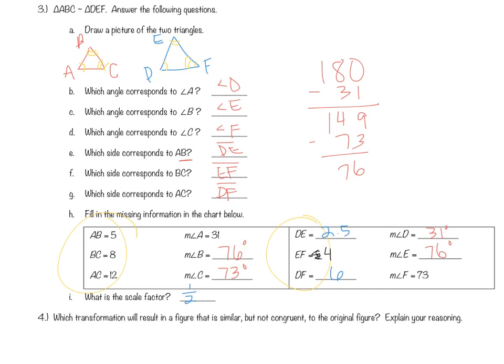Which transformation will result in a figure that is similar but not congruent? Dilation! Remember, that's the only one where the figure is not exactly the same.